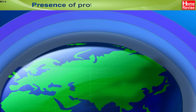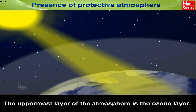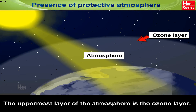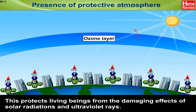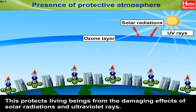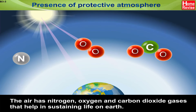The presence of a protective atmosphere: Earth is covered with a mixture of gases called air. The layer it forms around the Earth is called the atmosphere. The uppermost layer of the atmosphere is the ozone layer. This protects living beings from the damaging effects of solar radiations and ultraviolet rays. The air has nitrogen, oxygen, and carbon dioxide gases that help in sustaining life on Earth.